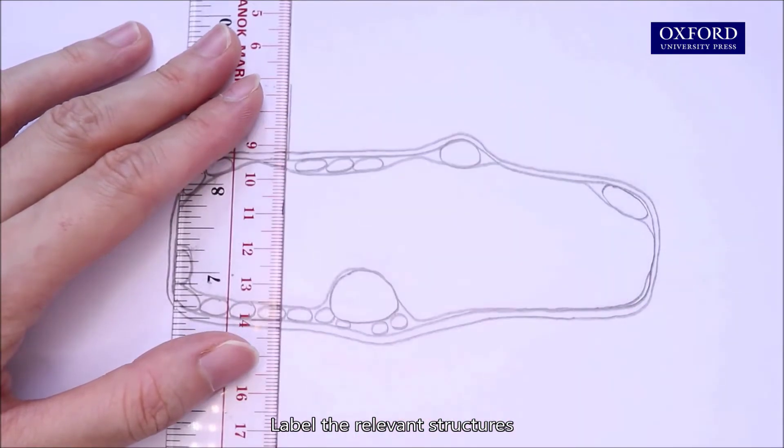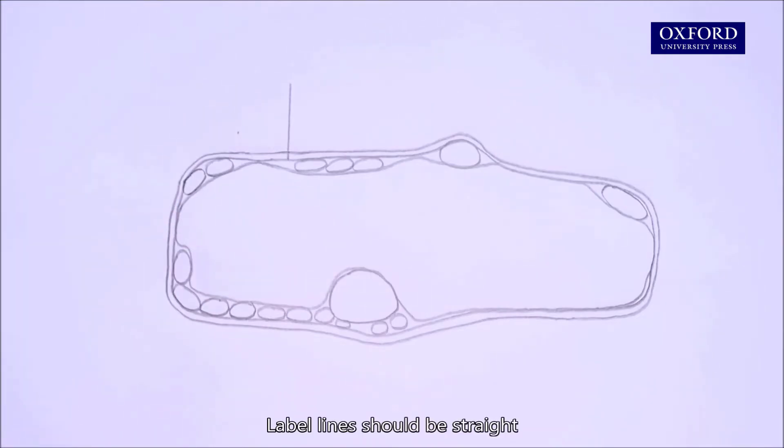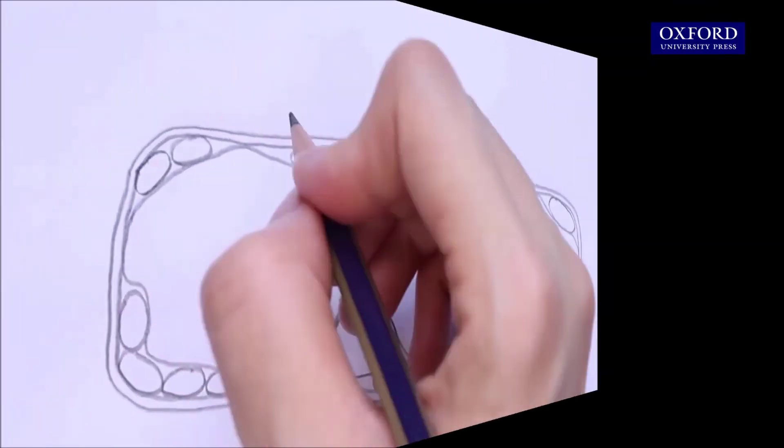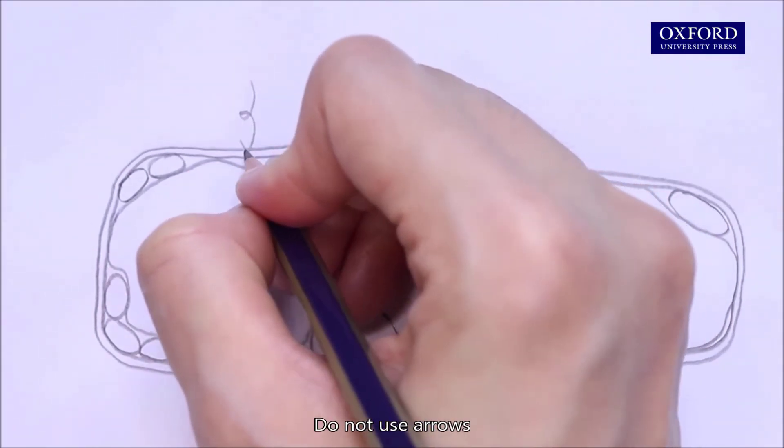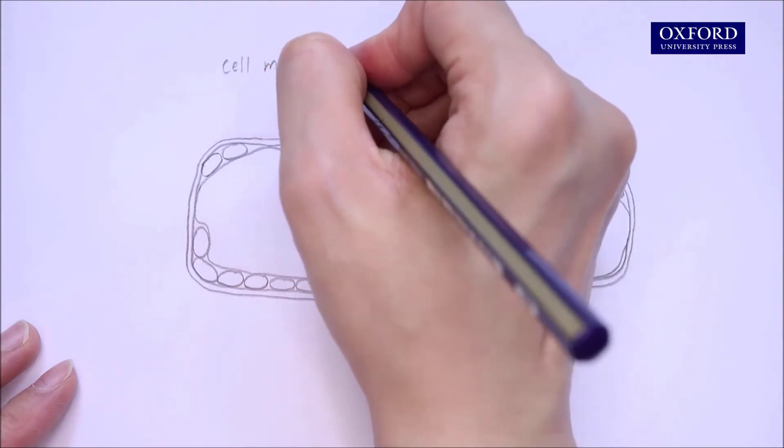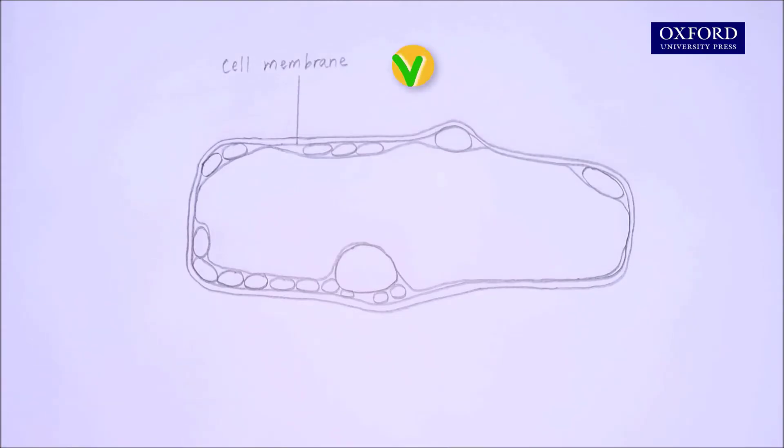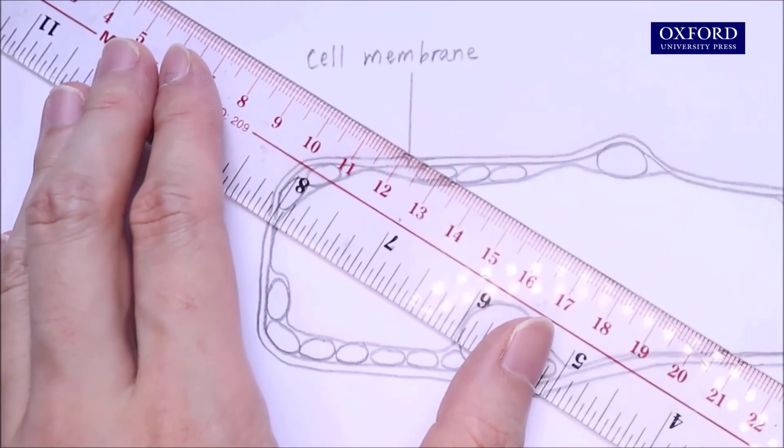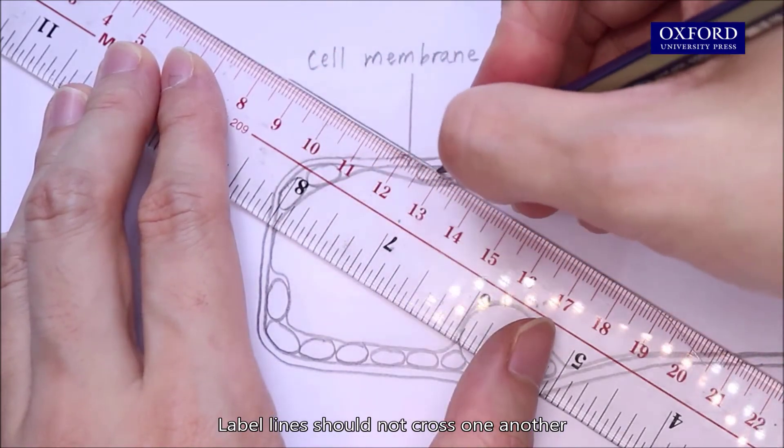Label the relevant structures. Label lines should be straight. Do not use arrows. Label lines should not cross one another.